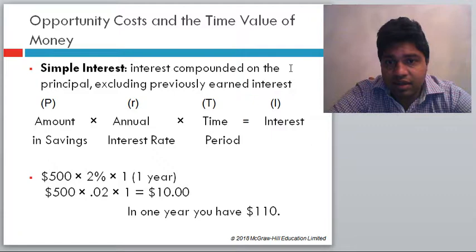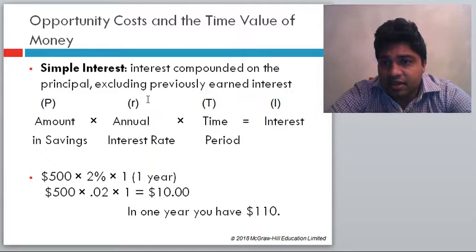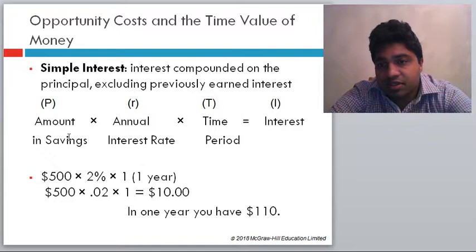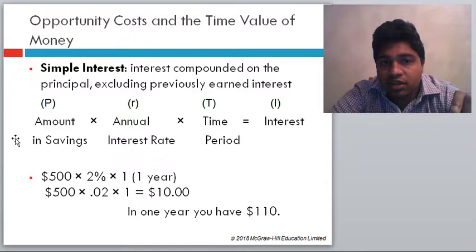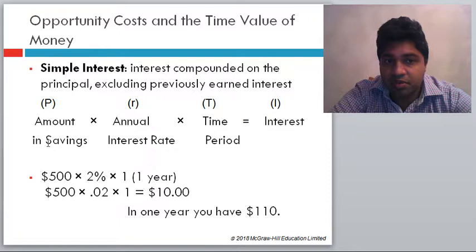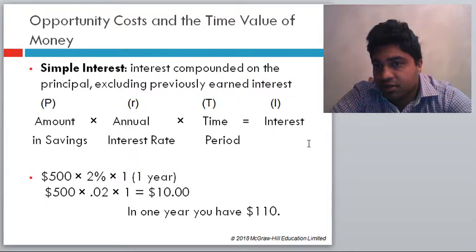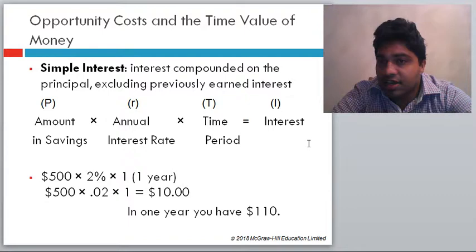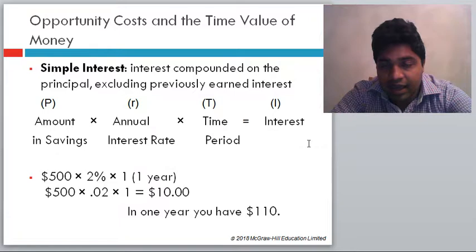Simple interest is interest compounded on the principal only, excluding previously earned interest. For example, investing $100 at 10% gives $10 interest per year. Over 2 years with simple interest: $100 × 10% × 2 = $20. The key point is that the interest earned in year 1 is not reinvested — you receive $110 at year end, withdraw the $10, and reinvest the original $100 again the next year. There is no 'interest on interest' in simple interest.